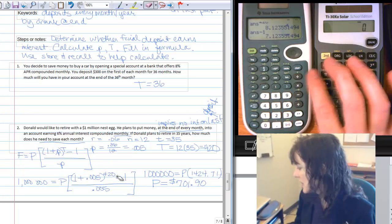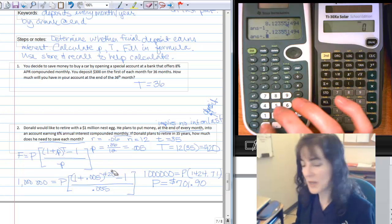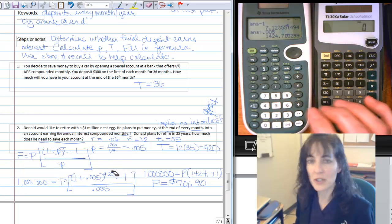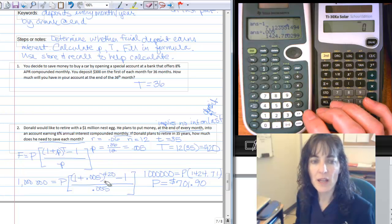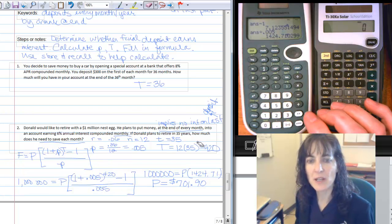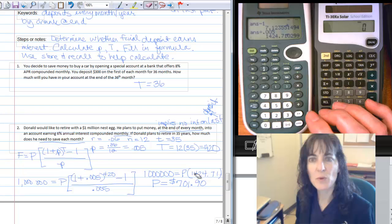So now I have the 7, and then divide by .005, enter, and now I have the 14 right here, this 14.24, or 14.24.71, and goes on.